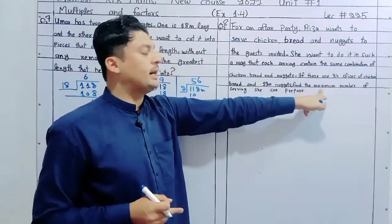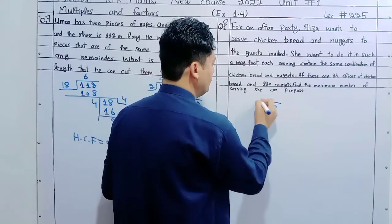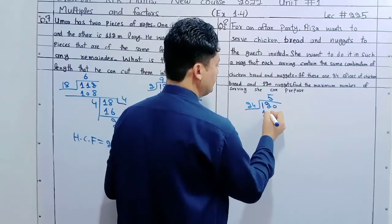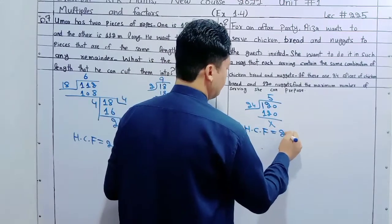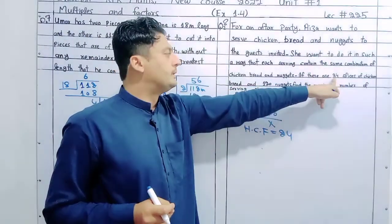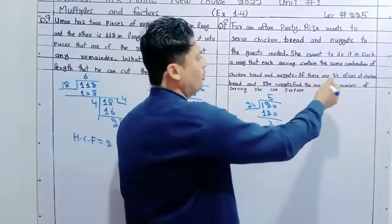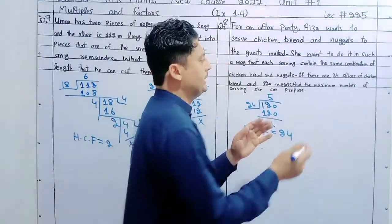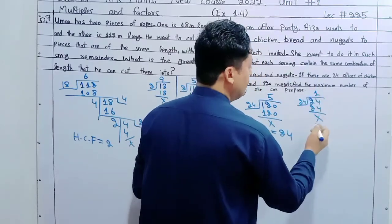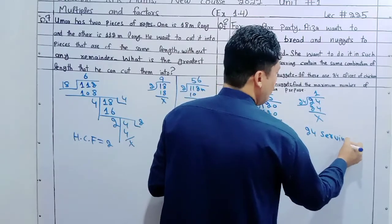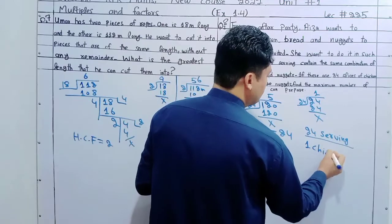So we have 24 slices of chicken bread. We divide 24 by the GCD to find the number of servings. The GCD of 24 and 120 will tell us the total number of servings — each serving getting the same number of chicken bread slices.